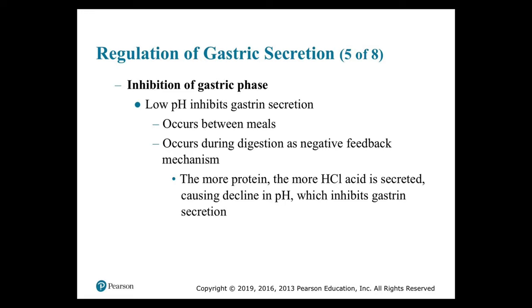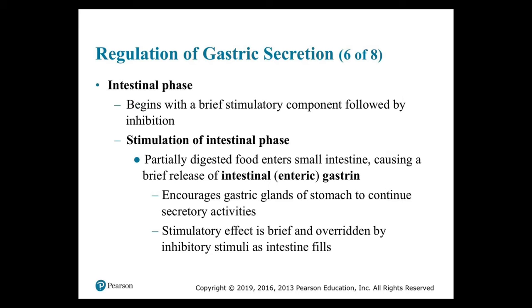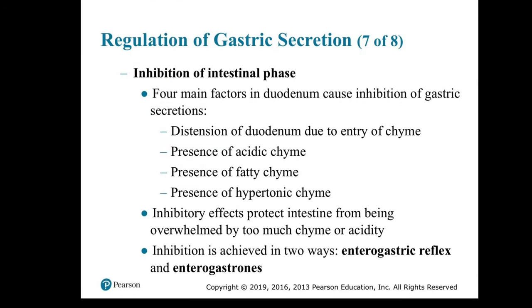Gastrin initiates HCl release from parietal cells and activates enzyme secretion by binding to receptors on parietal cells and stimulating enteroendocrine cells to release histamine. The buffering action of ingested proteins causes pH to rise, activating more gastrin secretion. Inhibition of the gastric phase: low pH inhibits gastrin secretion, occurring between meals as a negative feedback mechanism — the more protein, the more HCl secreted, which causes pH to decline and inhibits gastrin. The intestinal phase begins when chyme starts to enter the small intestine.